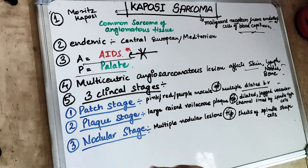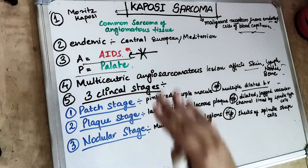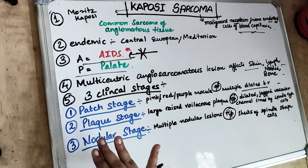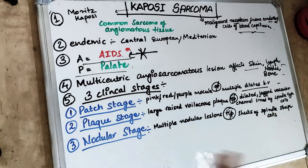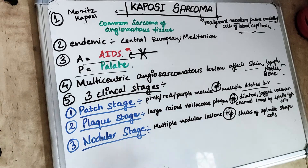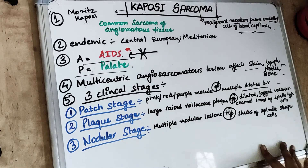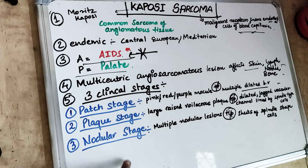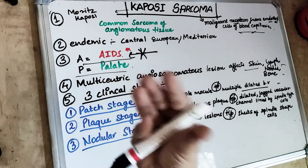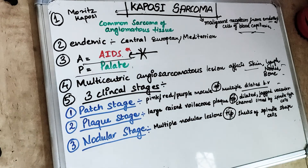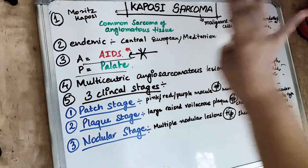Next comes the plaque stage wherein there is a little bit raised surface — a large raised volatous plaque. Looking at the histological sections, there are dilated jagged vascular channels which are lined by spindle type of cells. Then comes the last stage, which is the nodular stage. There are multiple nodular lesions present in the Kaposi Sarcoma, and in histological section there are sheets of spindle-shaped cells.